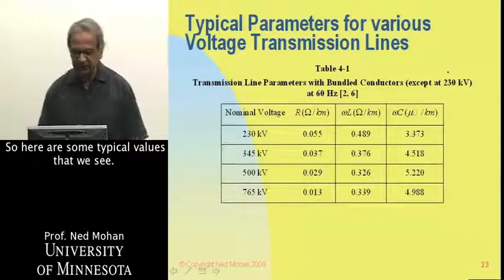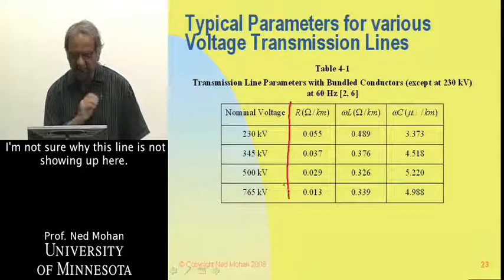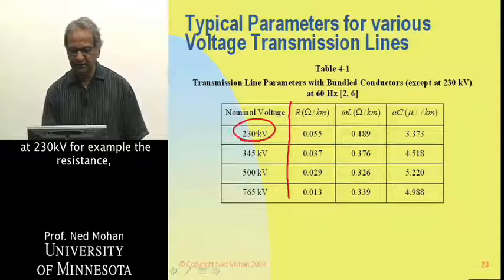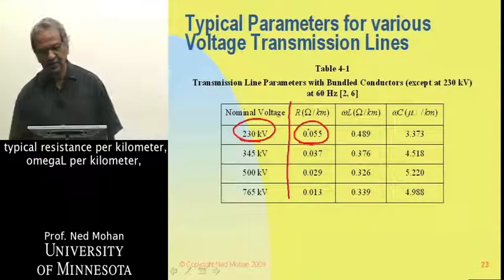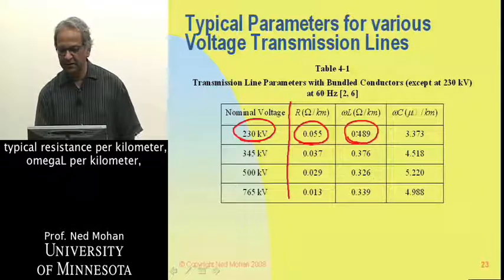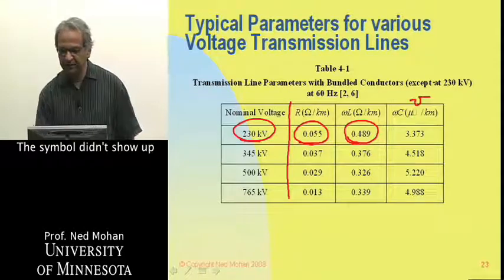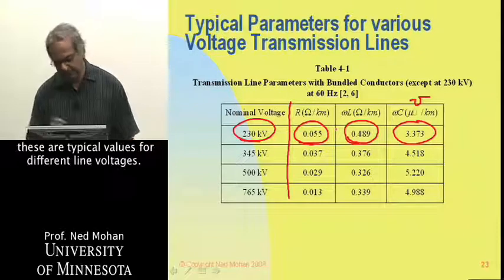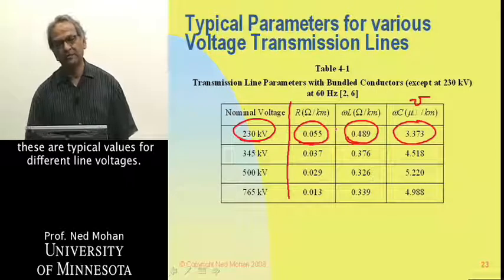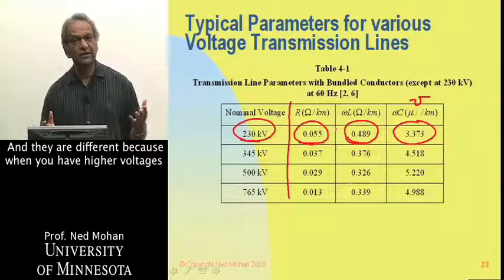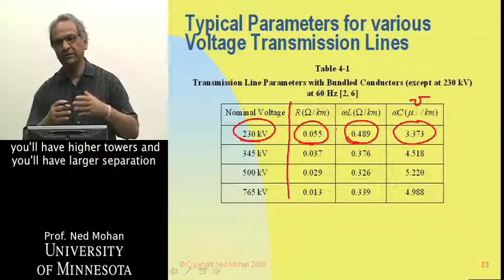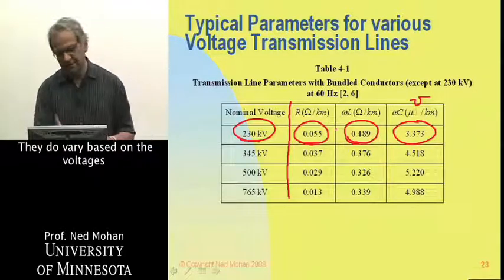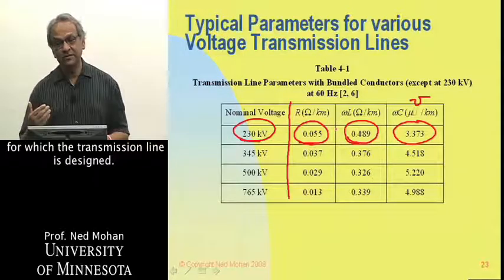So here are some typical values that we see. I'm not sure why this line is not showing up here. Let me just draw it. And it shows that at 230 kV, for example, the resistance, typical resistance per kilometer, omega L per kilometer, and omega C in micro-mores, this symbol didn't show up, per kilometer over here, omega C here. Similarly, these are typical values for different line voltages. And they are different because when you have higher voltages, you will have higher towers, and you will have larger separation between the conductors. So these values are not constant. They do vary based on the voltages for which the transmission line is designed.